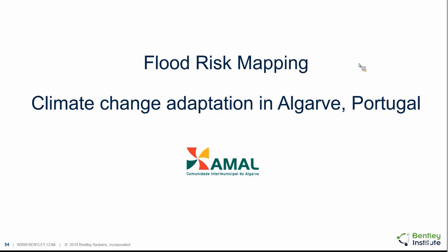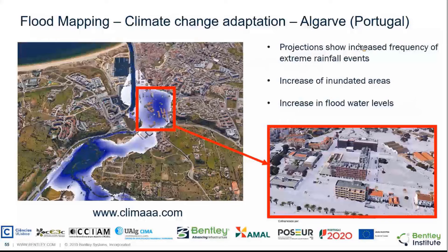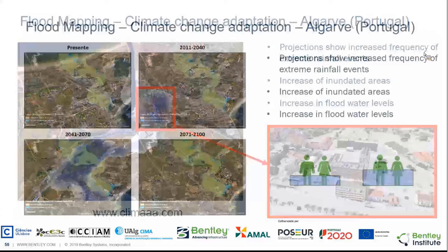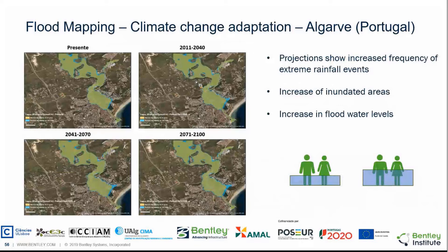We also used OpenFlows Flood for flood risk mapping in a climate change adaptation project in the south of Portugal, where climate projections show increased frequency of extreme rainfall events, increased inundated areas, and increased flood water levels. We analyzed seven different critical areas in this region and estimated flooding for different return period scenarios using climate change projections until 2100. We built scenarios and were able to identify critical areas that will be impacted in future decades to come.